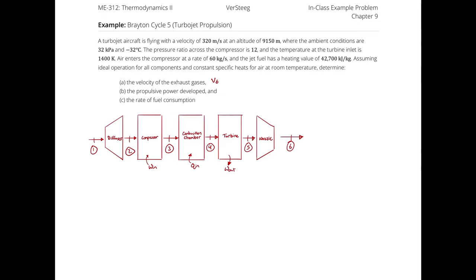To find turbine work, I need compressor work — from an energy balance on the compressor requiring states 2 and 3. I have the pressure ratio across them, so I really just need state 2 fixed. For state 2, I use state 1 conditions — 32 kilopascals and negative 32 degrees Celsius — and how much the diffuser increases enthalpy from 1 to 2. Therefore I need to analyze processes 1→2, 2→3, then 4→5, and 5→6. I need states 1, 2, 3, 5, and 6 fully defined.